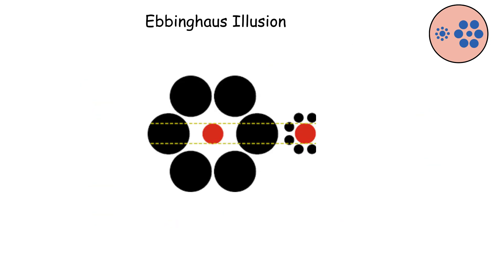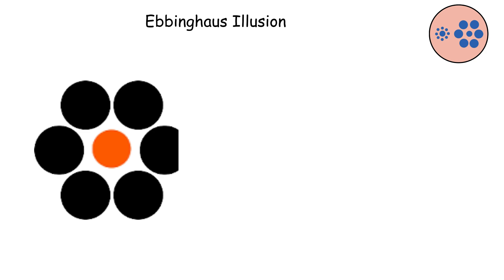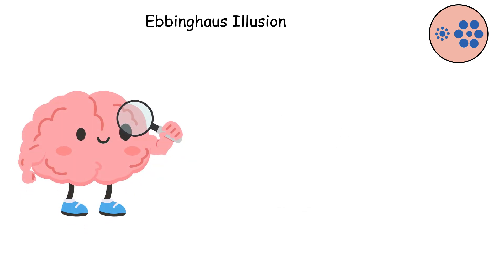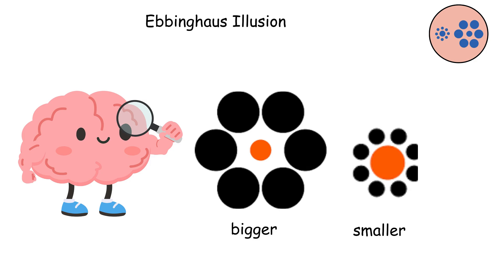In this illusion, you've got two circles that are exactly the same size, but one is surrounded by large circles, while the other is surrounded by small circles. Your brain immediately makes the circle surrounded by small circles look bigger, and the one surrounded by large circles look smaller.